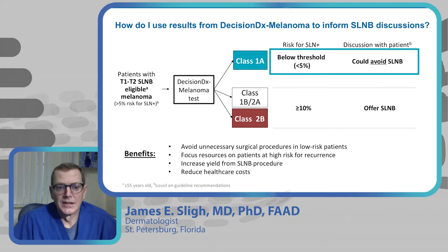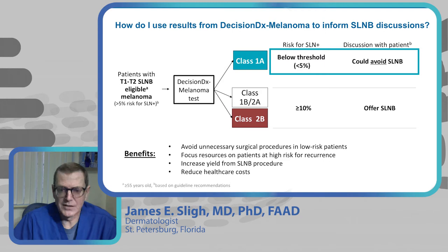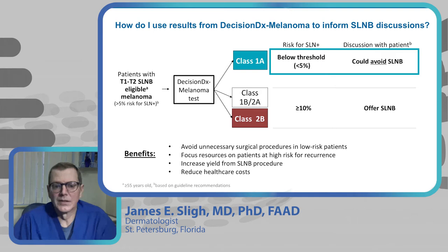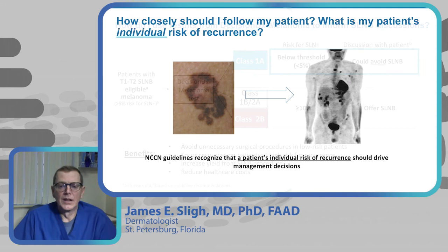In terms of a flow sheet: take sentinel lymph node biopsy eligible patients up to two millimeters in depth, perform the DecisionDx Melanoma test, and if you get class 1A and the patient is greater than 55 years of age, their positivity rate falls beneath the 5% NCCN threshold — these patients can avoid sentinel lymph node biopsy. Intermediate and high-risk patients exceed 10% positivity and should be offered the procedure, reducing unnecessary surgeries and increasing yield for those who truly benefit.